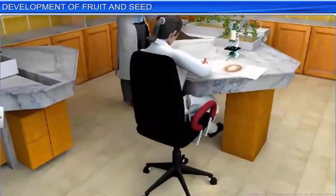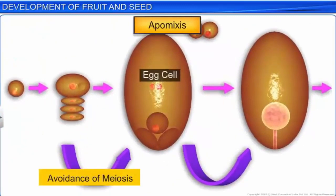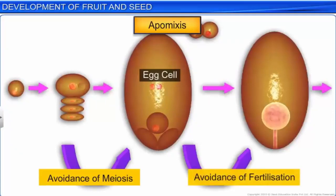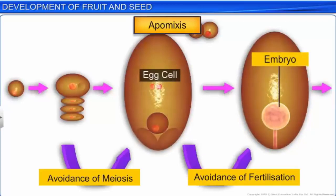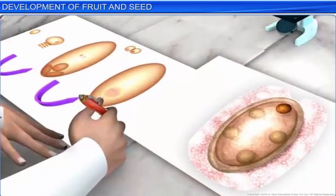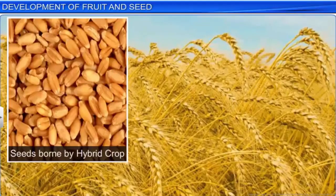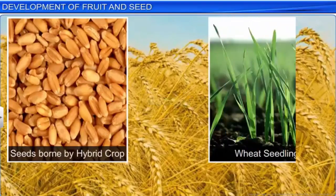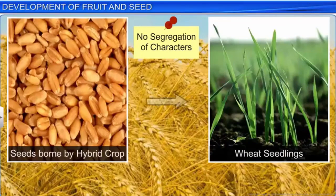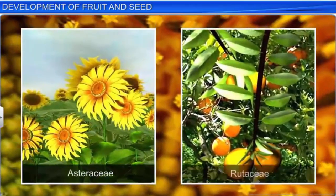To address this problem, botanists are trying to understand the genetics of apomixis and transfer apomictic genes into hybrid plants. Apomixis is a form of asexual reproduction in which seeds or embryos are formed without fertilization. In fact, seeds or embryos either develop from an unfertilized egg which did not undergo meiosis, or from the cells of the integument or nucellus. Botanists believe that converting hybrid crops into apomicts will prevent the segregation of characters in seeds produced by hybrid crops, and thereby eliminate the need to purchase hybrid seeds every year, as the seedlings produced by the apomict will resemble their parents genetically. Plants such as grasses and those belonging to the family Asteraceae and Rosaceae are common examples of apomixis.